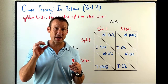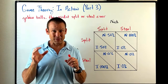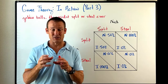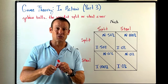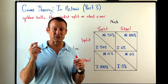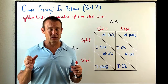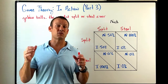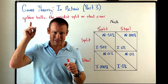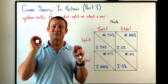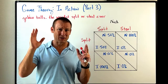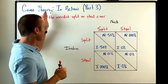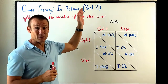Video four, we talked about Nash equilibrium — looking at outcomes and asking whether there's any incentive for either player to change their strategy given the strategy the other player plays. Video five was game theory in action, part one. Video six was game theory in action, part two. And now we've got game theory in action, part three.